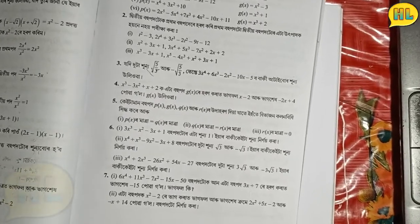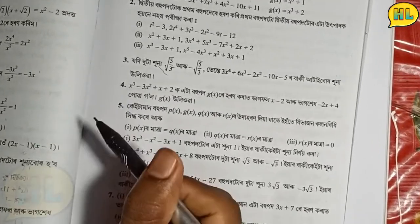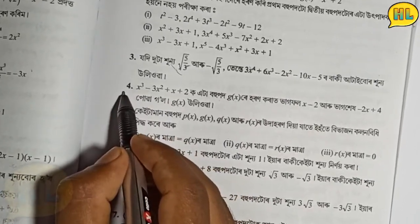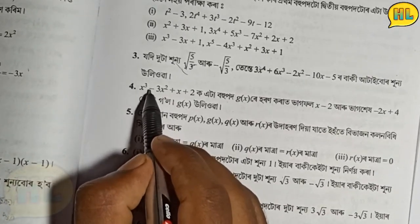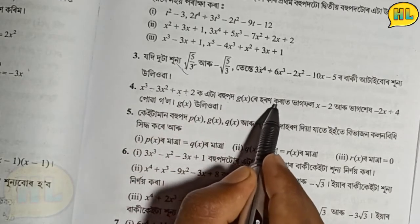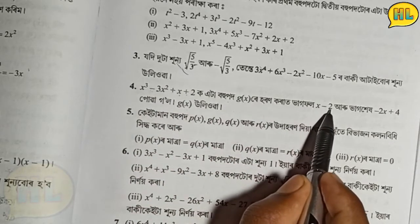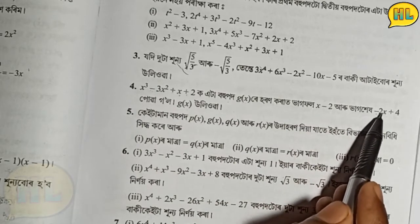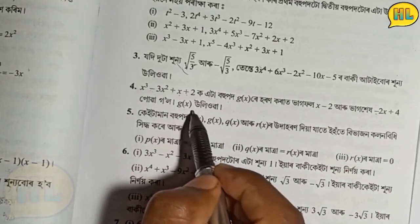Hello and welcome to my channel Happy Learning. In this class we're going to learn Exercise number 2.3. We're going to show that the polynomial x cube minus 3x square plus x plus 2 is divisible by x minus 2 and minus 2x plus 4.